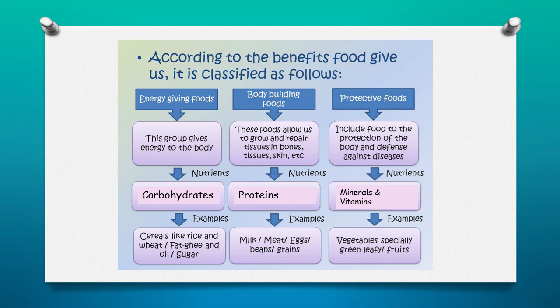Let us see how energy-giving food helps us. It helps us to give energy and it helps the body to work. From energy-giving food we obtain carbohydrates. We get carbohydrates from cereals like rice, wheat, etc.